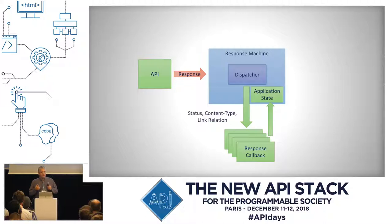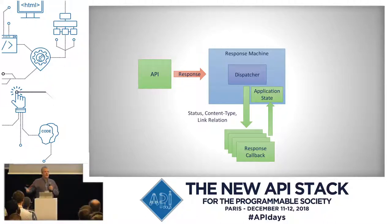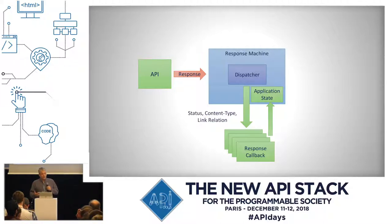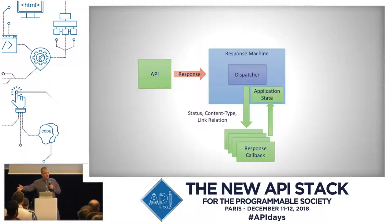Obviously we need to do something with the data that comes back. When the dispatcher fires off to the response machine, those callbacks are going to want to update some kind of application state — take the data that came back and update the application with it. By building this kind of infrastructure, you can make it a lot easier to create reusable, flexible, and evolvable code. Because today an API may only return one status code, but tomorrow it returns a status code you weren't expecting. As long as the response machine has been programmed to deal with that type of response, it already knows how to handle it, even though it's a different API than before.